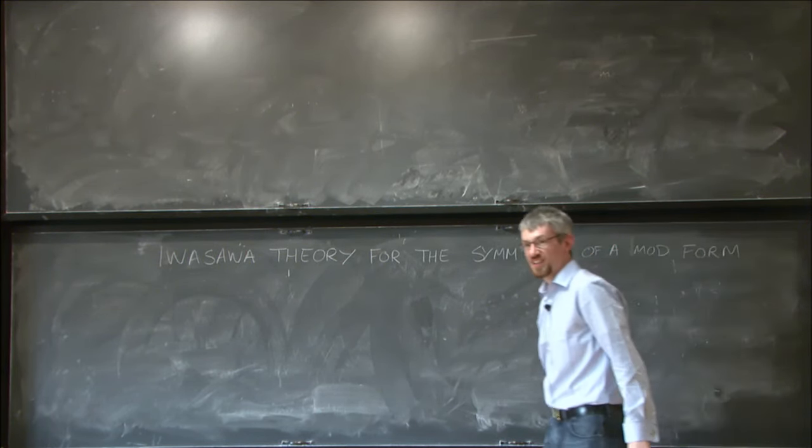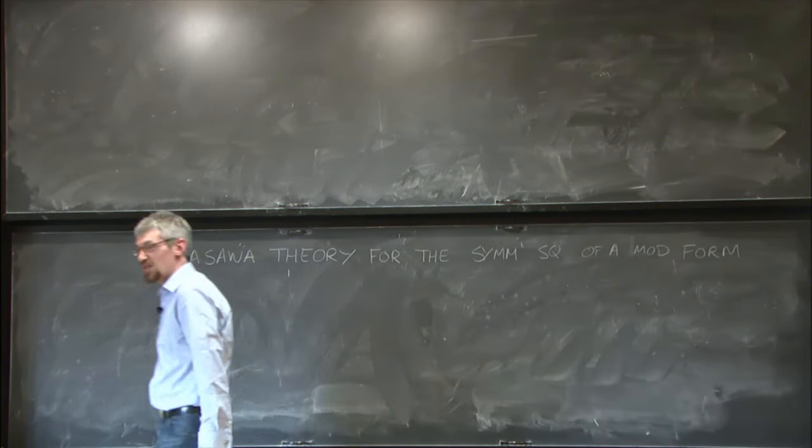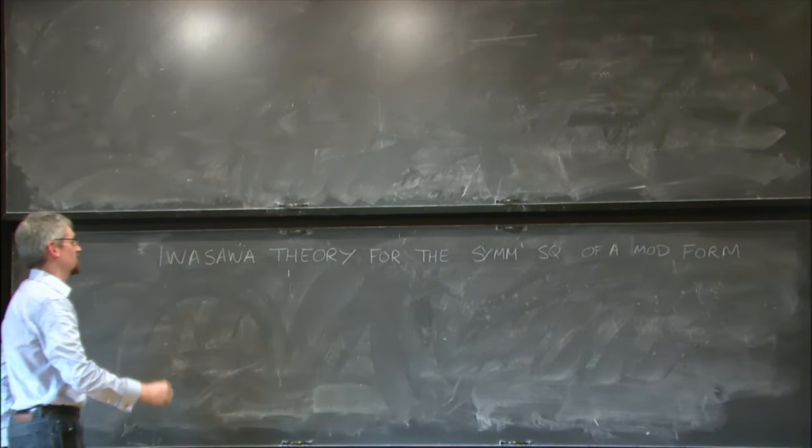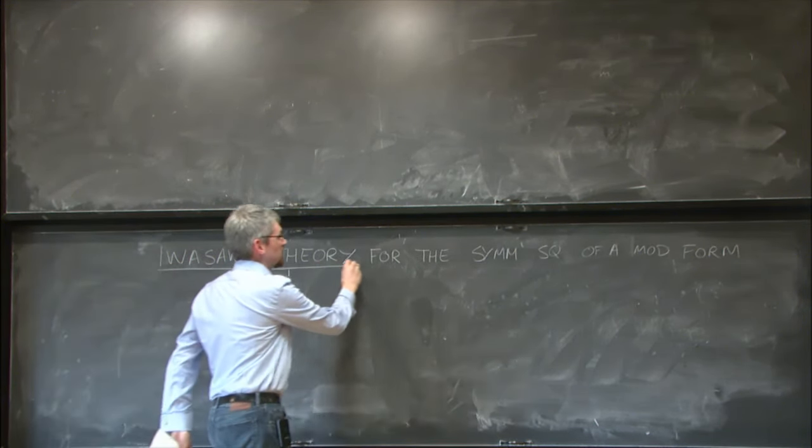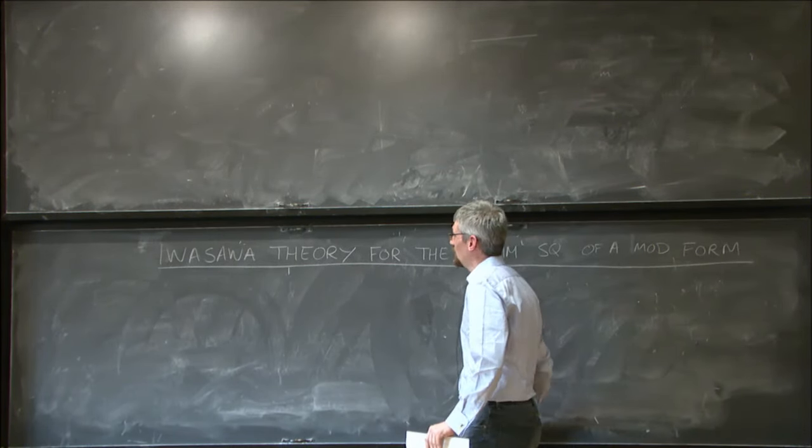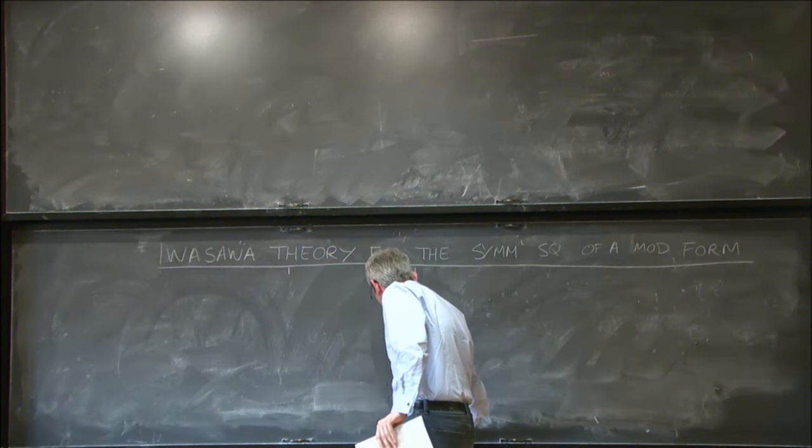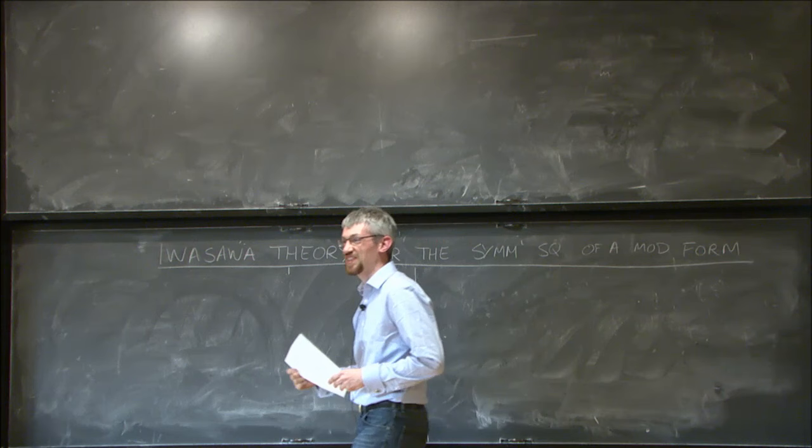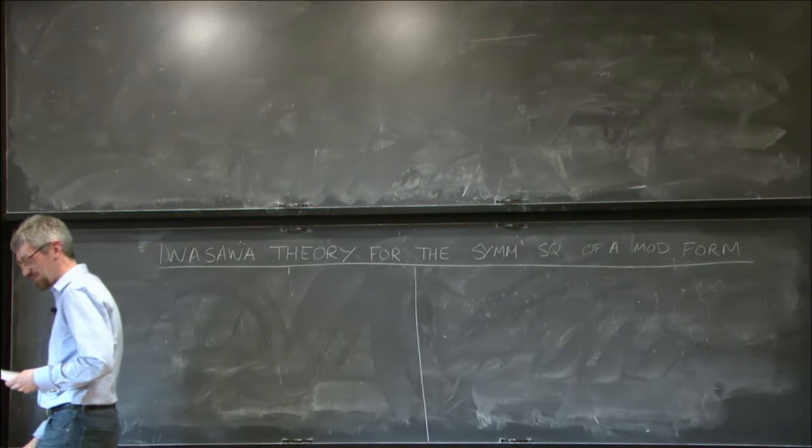Because I'm aware that the number theory group here covers quite a wide range of interests, I thought I'd start by giving you a brief summary of what Iwasawa theory is, and the kind of things one hopes to prove with Iwasawa theory, before concentrating on the specific case where we can actually do something new. This is in some sense a continuation of Sarah's talk two weeks ago, but the introductory material should maybe have gone before Sarah's talk.